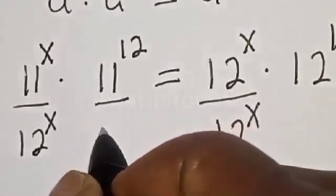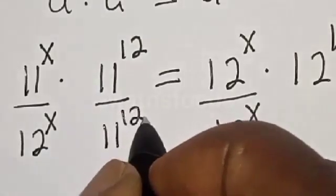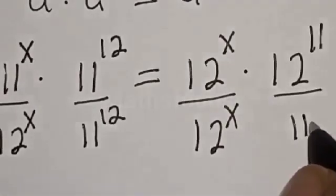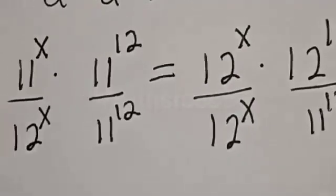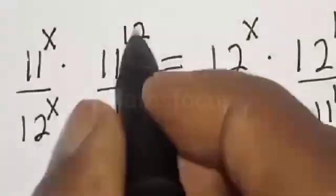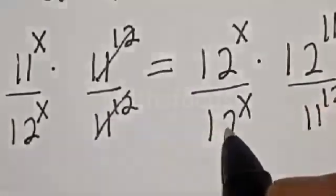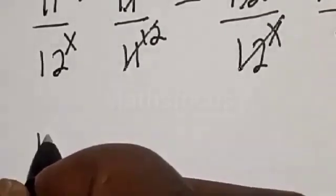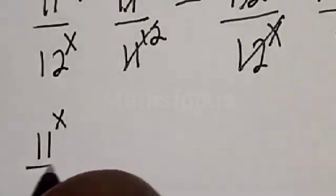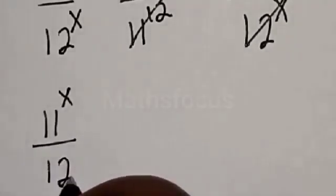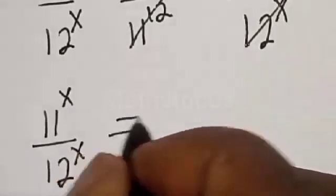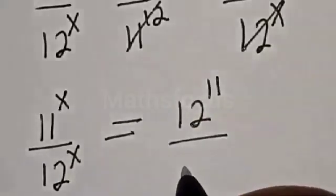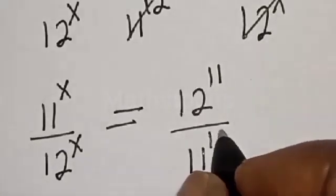Dividing by 11 raised to power 12 on both sides, the 12 raised to power s terms cancel. We are left with 11 raised to power s divided by 12 raised to power s, equal to 12 raised to power 11 divided by 11 raised to power 12.